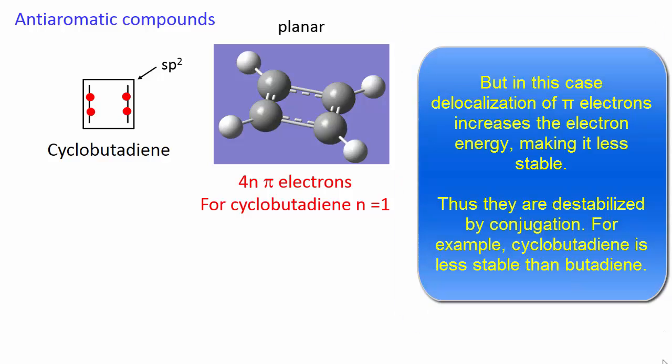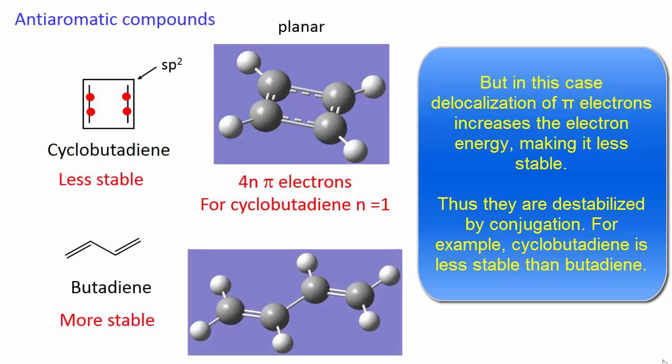But in this case, delocalization of the pi electrons increases the electron energy, making it less stable. Thus, they are destabilized by conjugation. For example, cyclobutadiene is less stable than butadiene.